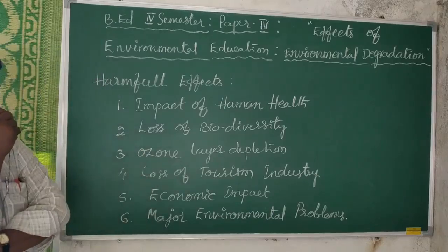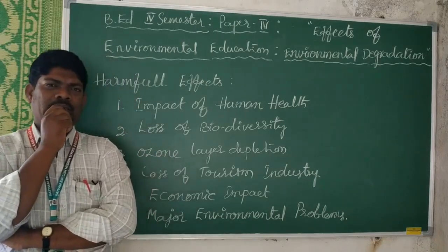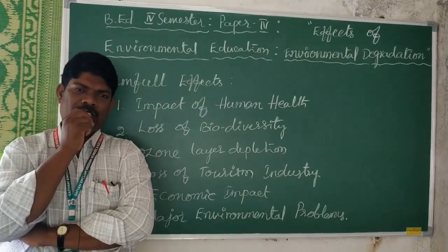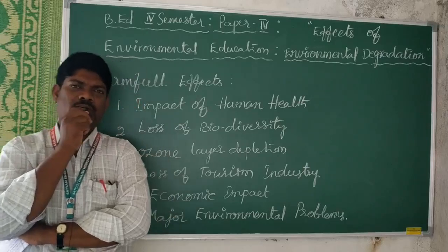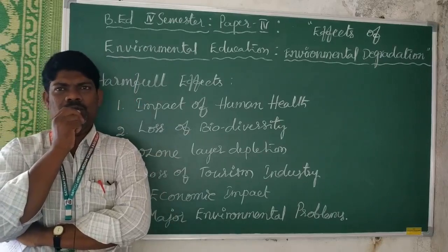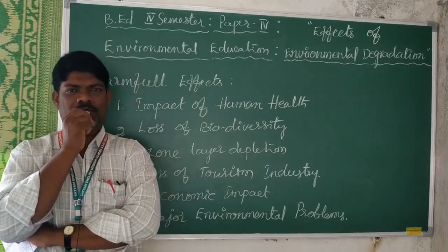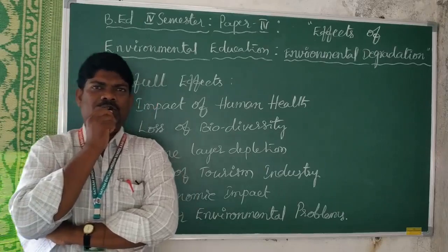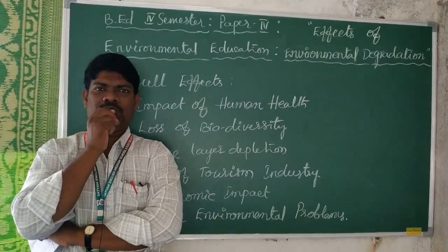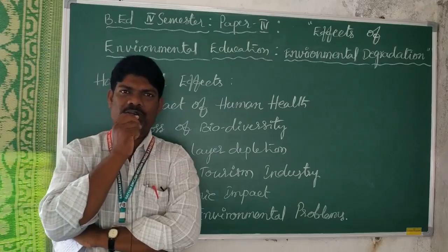Next, let us go to loss of biodiversity. Biodiversity means all the flora and fauna living in an area in cooperation and coordination with one another. In this area, the green cover is getting eradicated due to environmental degradation. That is why the effects of air pollution and land pollution are causing the loss of biodiversity. We have to prevent this type of environmental degradation.